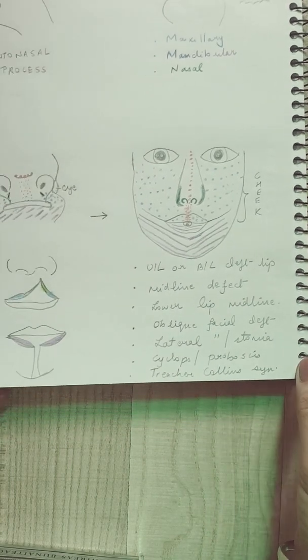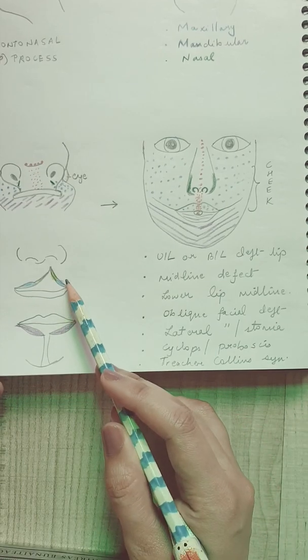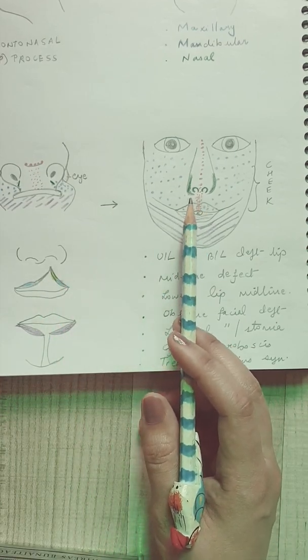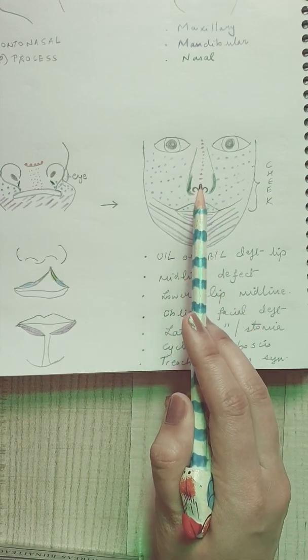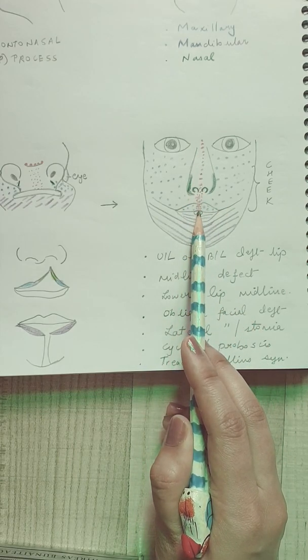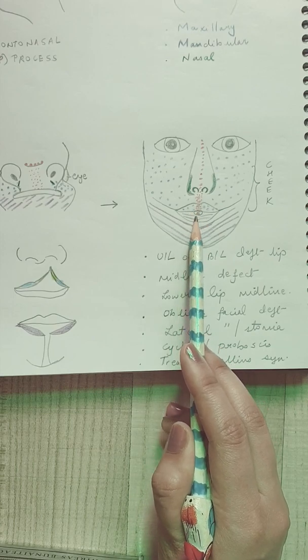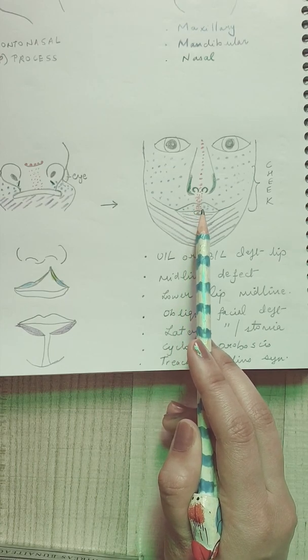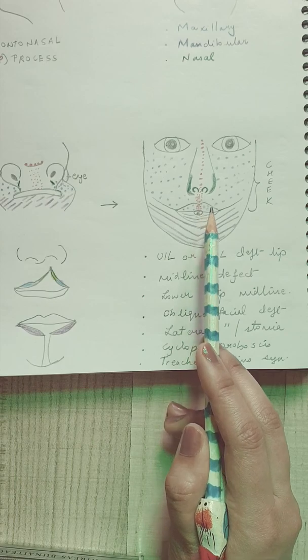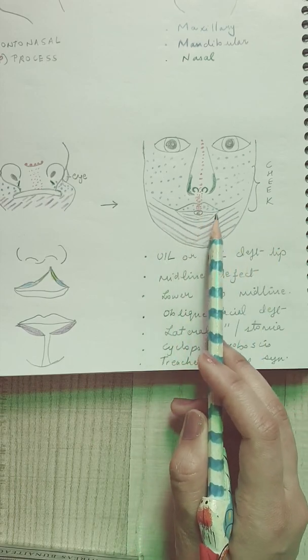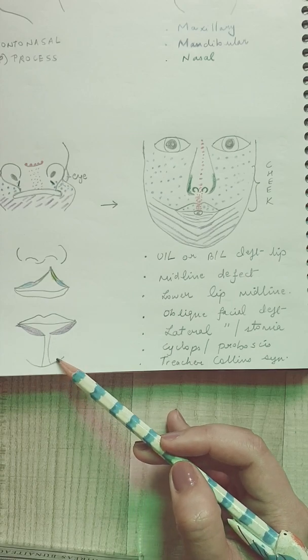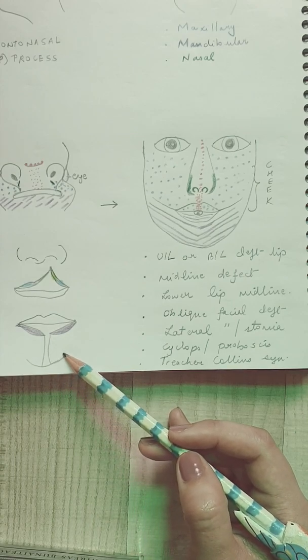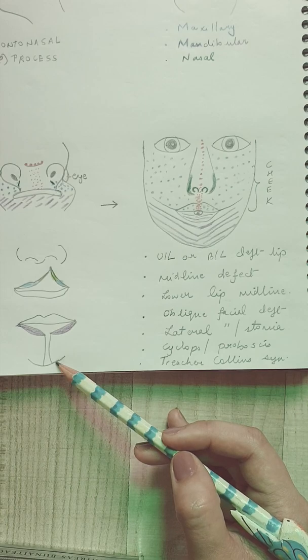That is all that you need to know in the basis for these embryological structures. The unilateral or the bilateral cleft lip will happen because of the failure of fusion of these medial nasal and the maxillary processes. Midline defect will occur when the frontonasal process gets involved. The mouth is formed by the stomatodium, that was the primitive mouth. The lower lip is formed by the mandibular processes, and failure of fusion will lead to a rare cleft in the lower part in the midline extending to the chin.